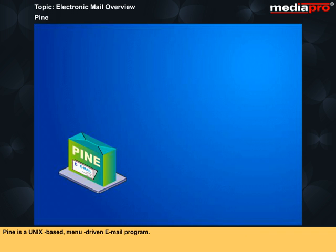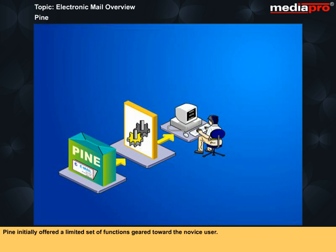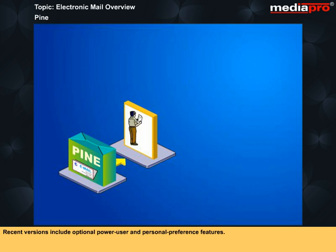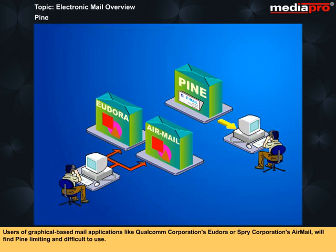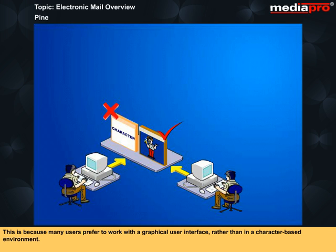PINE is a Unix-based, menu-driven email program. PINE initially offered a limited set of functions geared towards the novice user. Recent versions include optional power user and personal preference features. PINE is one of the most popular Unix email packages. Users of graphical-based mail applications like Qualcomm Corporation's Eudora or Spry Corporation's Air Mail will find PINE limiting and difficult to use, because many users prefer to work with a graphical user interface rather than in a character-based environment.